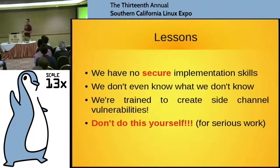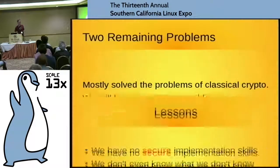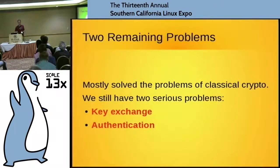So those of us who are programmers have no skills in implementing code securely. We know so little we don't know what we don't know — there's an odd Dunning-Kruger effect that leads to a lot of exploits. We are actually trained to make side-channel vulnerabilities. The point: don't go implementing algorithms yourself even if you know they're perfectly good. Only use libraries that have been vetted by the community.